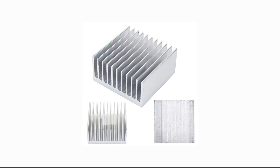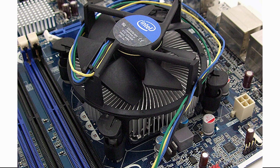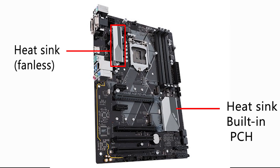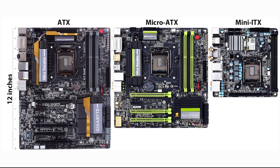A heat sink is a thermally conductive metal device designed to absorb and disperse heat away from a high-temperature object such as a computer processor. Usually, heat sinks are outfitted with fans to help keep both the CPU and the heat sink at an appropriate temperature. The motherboard form factor indicates the shape and size specification of the board, and also determines additional parameters such as the casing, power supply, mounting holes, and overall physical layout.